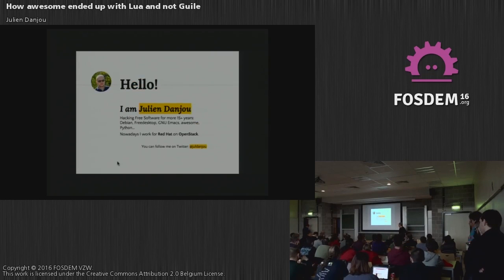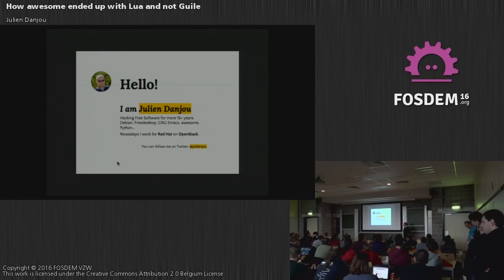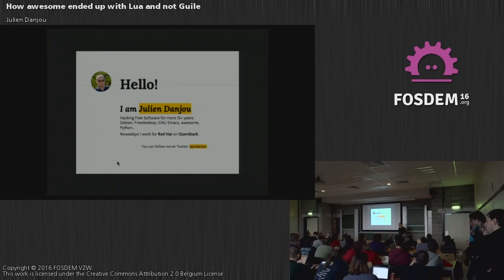Who am I? I'm Julian. I've been doing free software things for a while now. I'm not that old, but I started quite young. I've been with Debian/Linux for most of my life. Nowadays I work at Red Hat on OpenStack, so I do Python stuff. I'm really not into Guile and Loire anymore for a few years.